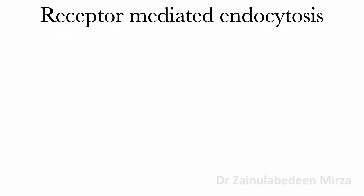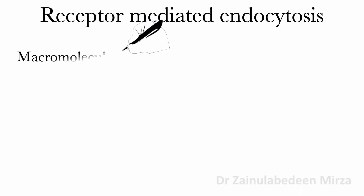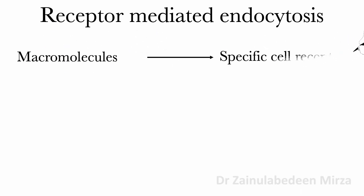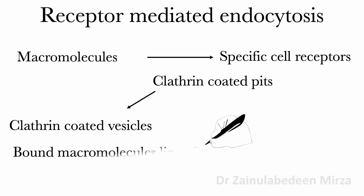Receptor-mediated endocytosis, or clathrin-mediated endocytosis, is a process for the selective uptake of specific micromolecules. The micromolecules bind to specific cell receptors which are concentrated in the specialized region of the plasma membrane called clathrin-coated pits. These pits bud from the membrane, forming small clathrin-coated vesicles containing the receptors and their bound micromolecule ligands.